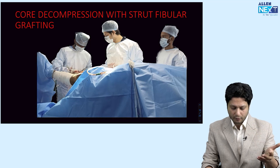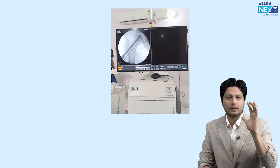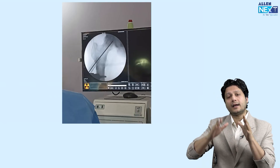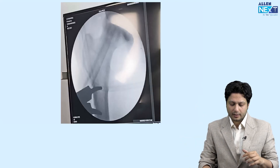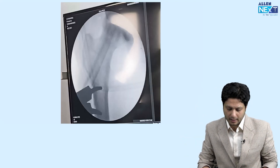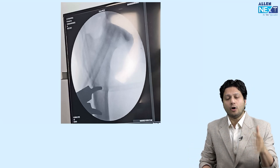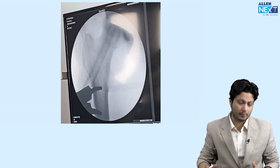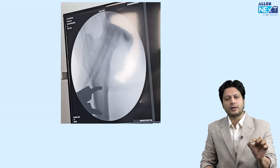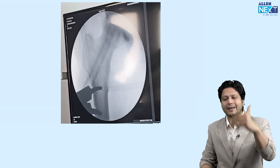After harvesting and preparing the fibula, we proceeded with core decompression. After decompressing the head of the femur and creating a space for the fibula to be incorporated, we advanced the fibula into the femoral head with the hope that the patient will be relieved after some time and the femoral head will be saved — hopefully avoiding total hip replacement in the near future, allowing the patient to work with this preserved femoral head for many years to come.